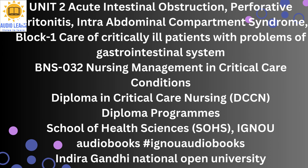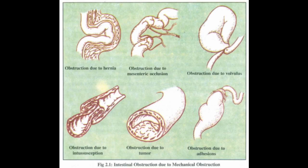2.2 Acute Intestinal Obstruction. We shall discuss about definition, etiology, diagnostic assessment, pathophysiology, clinical manifestation, therapeutic and nursing management. 2.2.1 Definition: Partial or complete impairment of the forward flow of intestinal contents is known as intestinal obstruction. It is the failure of intestinal contents to move through the bowel lumen. Obstruction of the large bowel occurs much less frequently than small bowel obstruction.